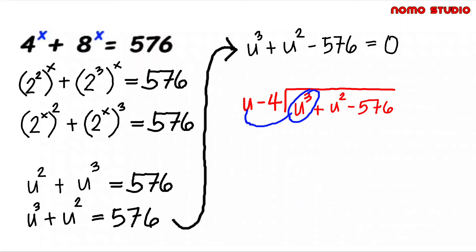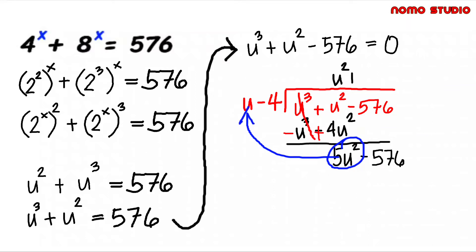U cube divided by u, that is u squared. U squared times u minus 4, that is u cube minus 4u squared. Change both signs, so cancel out, then u squared plus 4u squared, that is 5u squared. Bring down negative 576. 5u squared divided by u, that is 5u. 5u times u minus 4, that is equal to 5u squared minus 20u.